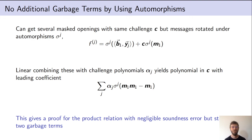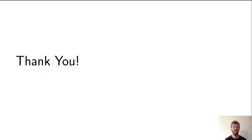The advantage of this approach over simply repeating the basic protocol is that we still end up with only a single quadratic polynomial in C, meaning there are still only two garbage terms total. Repeating the product proof multiple times would produce two garbage terms per repetition, incurring additional commitment costs. With this, I finish my presentation. Thank you very much for listening.